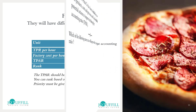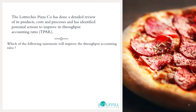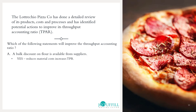Now let's look at a typical exam question: which actions will improve the throughput accounting ratio? Option A — a bulk discount on flour is available from suppliers. Flour is a material cost, and throughput return is sales price minus ingredients. Getting a bulk discount reduces material costs, which increases throughput return — the numerator — and therefore increases the TPAR. That is true. Option B — a loyalty discount will be given to a restaurant customer. Giving a loyalty discount reduces the sales price, which reduces throughput return, so that will not improve the TPAR.